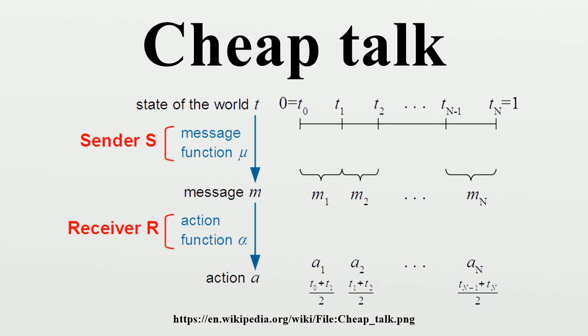Actions. Since actions are functions of messages, actions are also constant over these intervals. For t_{i-1} < t < t_i, α = a_i.